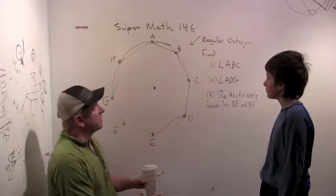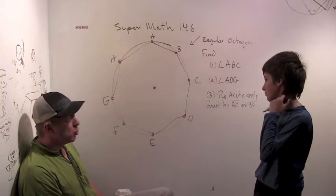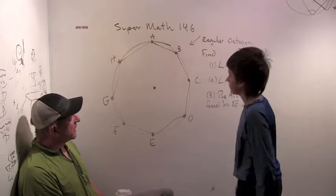Alright, we're in the review section on angles and circles, and we did a problem like this about a 12-sided dodecagon. Yep. So here we've got a regular octagon.